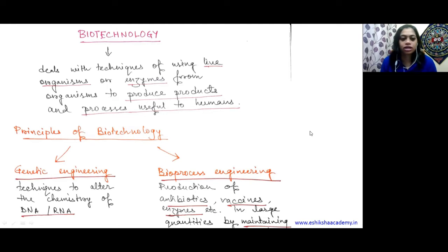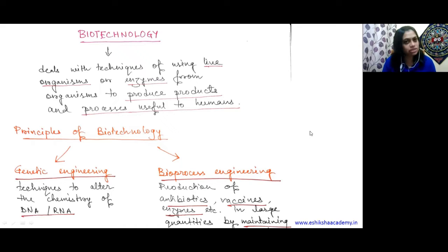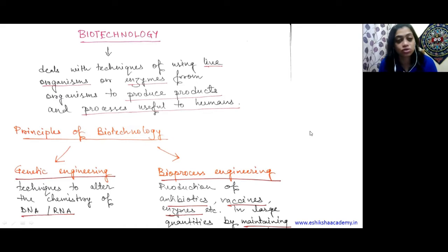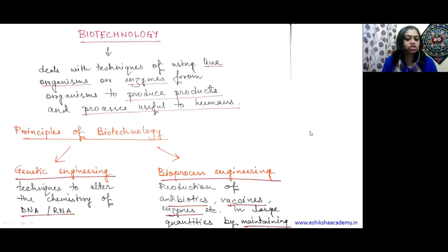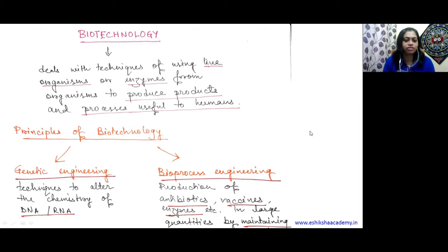So the principles of biotechnology are basically of two types: genetic engineering and bioprocess engineering. These are the two broad ways we can use biotechnology for human welfare.